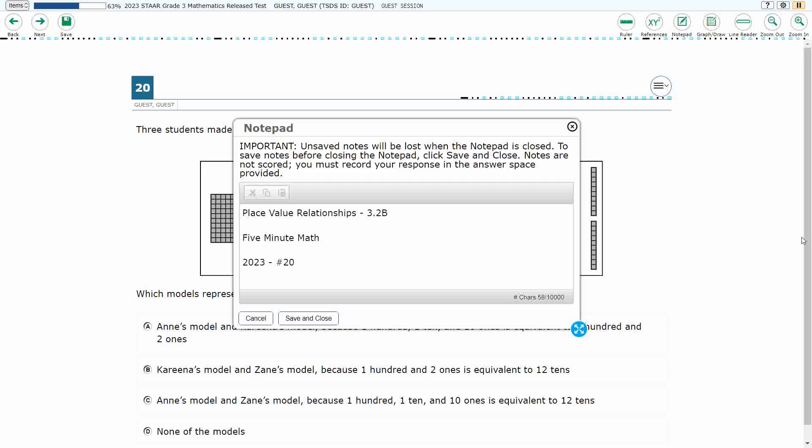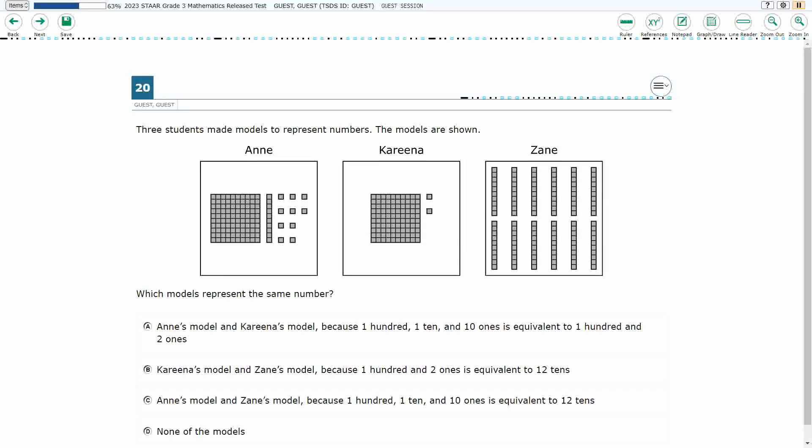Hello, and welcome to 5-Minute Math. Today we are looking at the 3rd grade concept of Place-Value Relationships. This is standard 3.2b in the great state of Texas, and we are using item number 20, the 2023 released STAAR test.